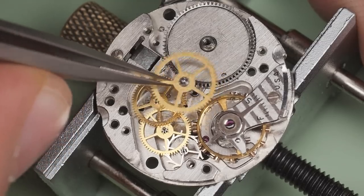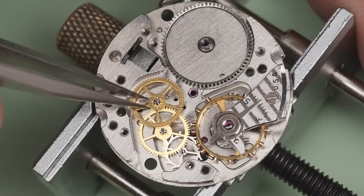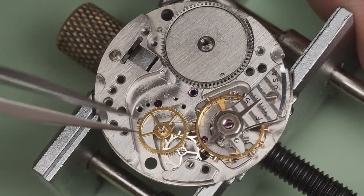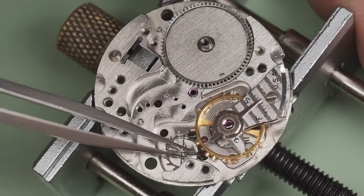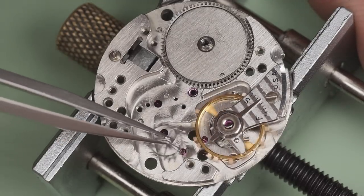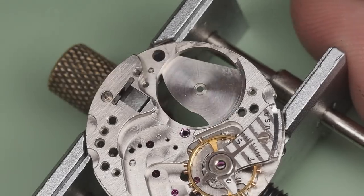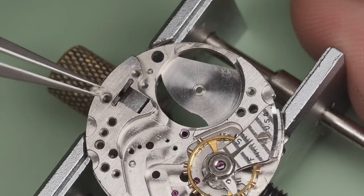The train of wheels is removed starting with the center wheel, followed by the third wheel, and the fourth wheel, and finally the escape wheel. The barrel is lifted away. Oh and I'll nab the setting lever screw right now too.